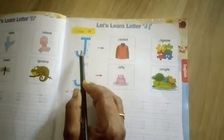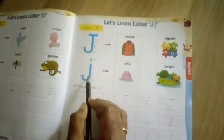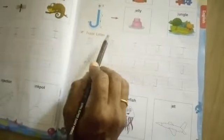Next page 25. J for Jacket, J for Jalebi, J for Jelly, J for Jungle. Trace letter J. Capital letter trace. Small J.